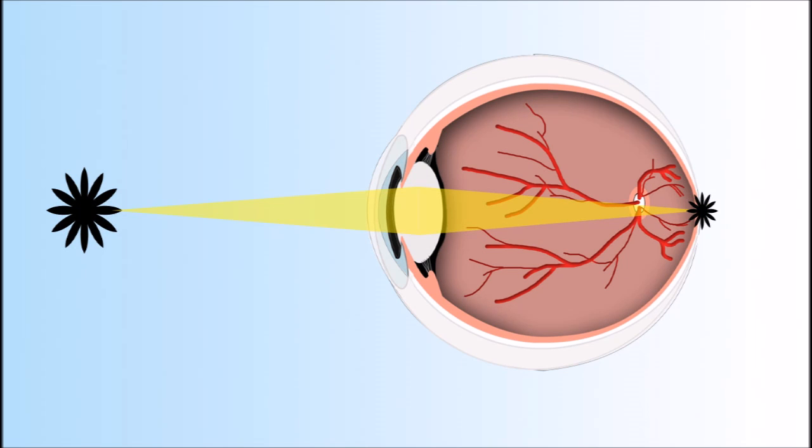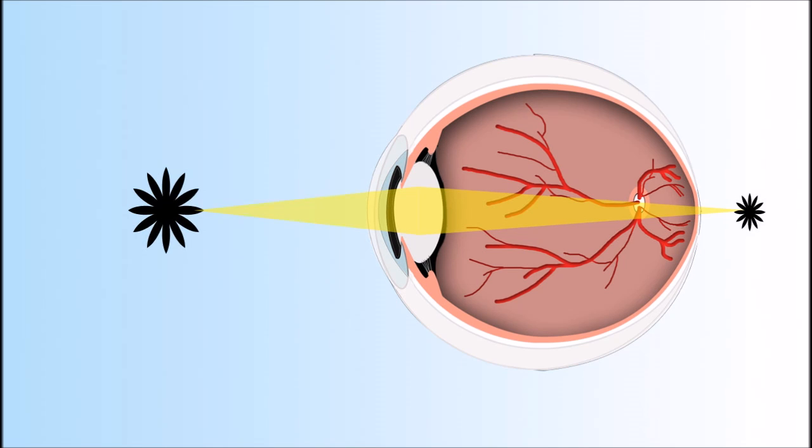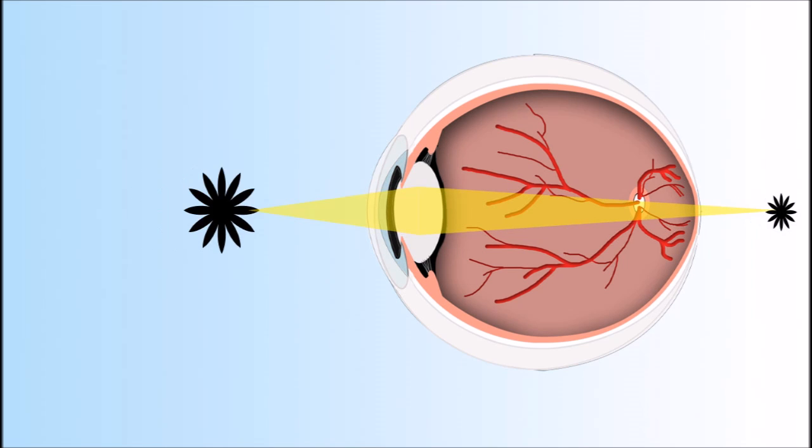In a presbyopic patient, the lens lacks the flexibility to refocus the image on the retina. This causes the image to focus further and further behind the retina as objects move closer to the observer. The presbyopic patient sees blurry up close because the image on the retina is blurry and out of focus.